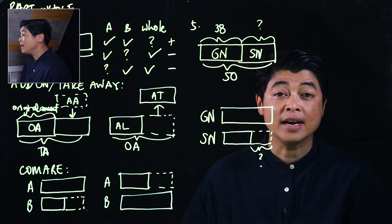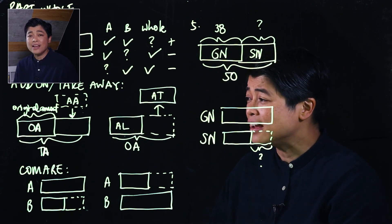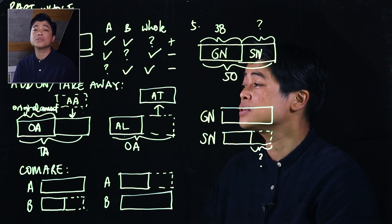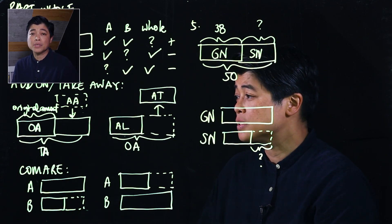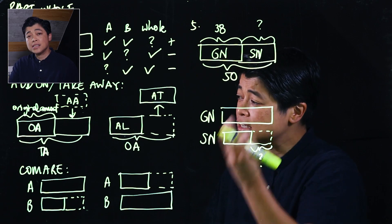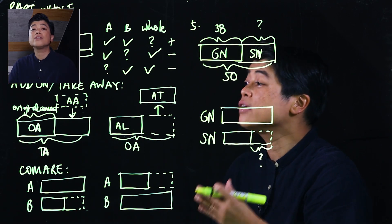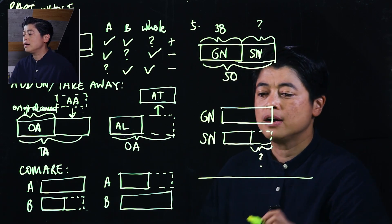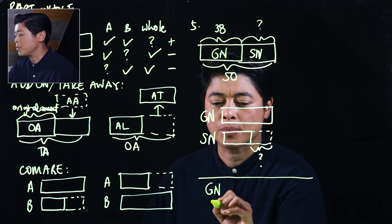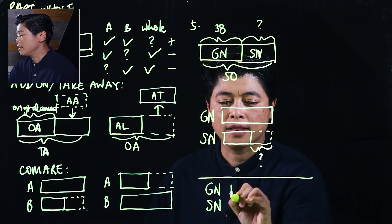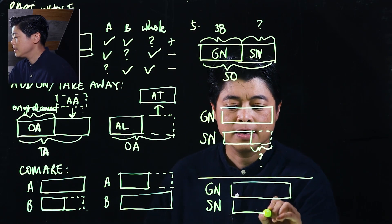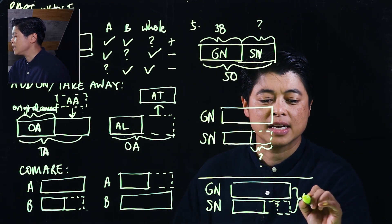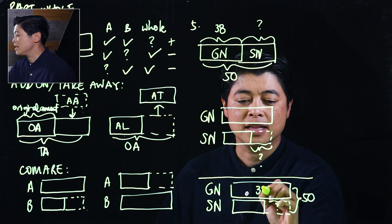The book uses just one combined bar model showing the greater number, smaller number, and question mark, labeling the whole as 50 and one part as 38. I believe this is too confusing for kids. A two-step problem is easier to understand with two separate bar models rather than one combined bar model.